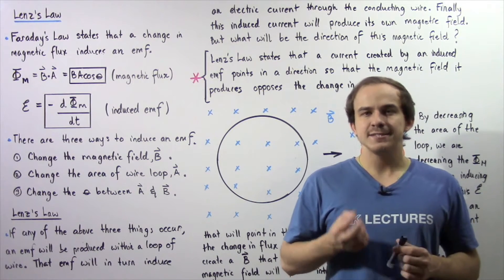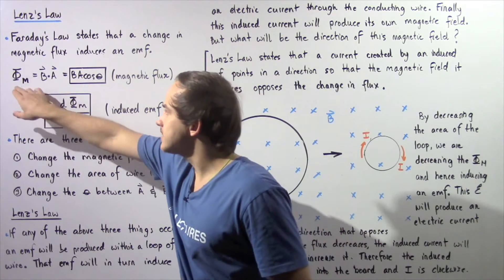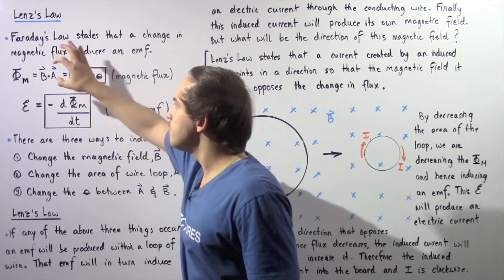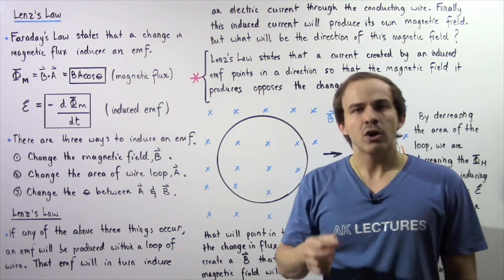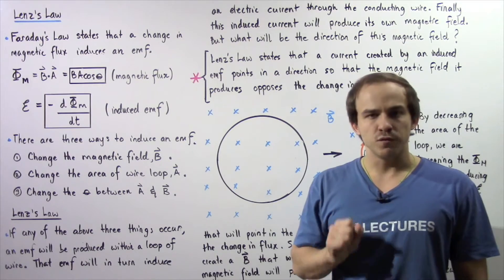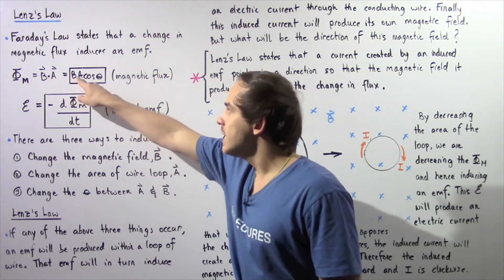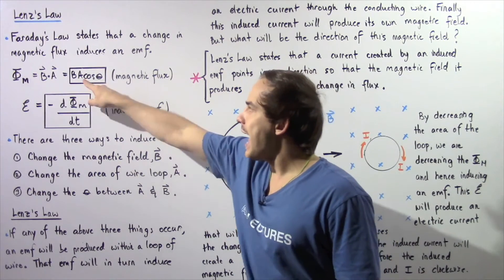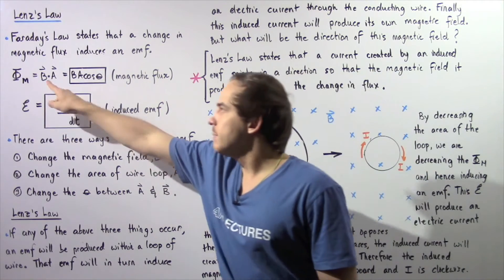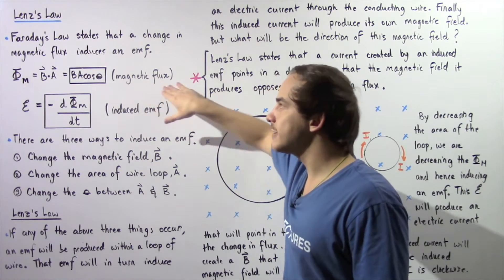What exactly is magnetic flux? We define magnetic flux, given by Phi with the M symbol, as the dot product of our magnetic field vector B and our area vector A. By definition of the dot product of two vectors, this is equal to the product of the magnitude of B, the magnitude of A, and the cosine of the angle theta, which is the angle between these two vectors. This is known as the magnetic flux.